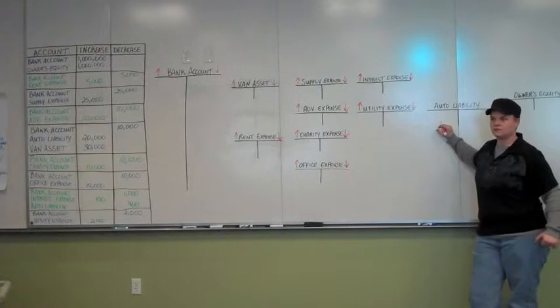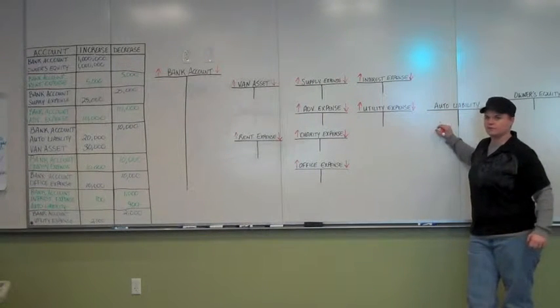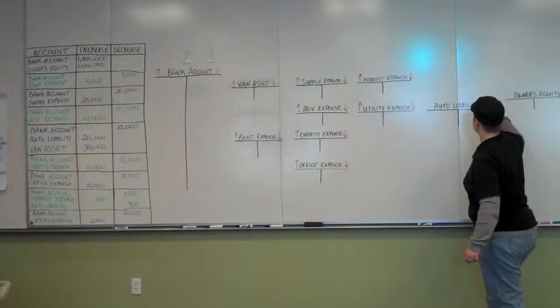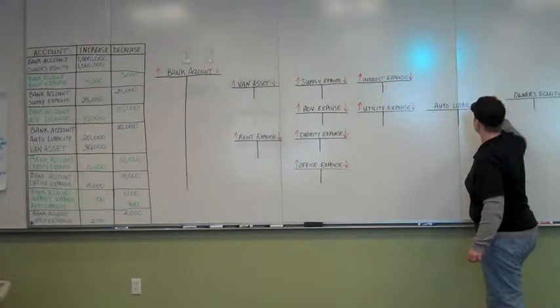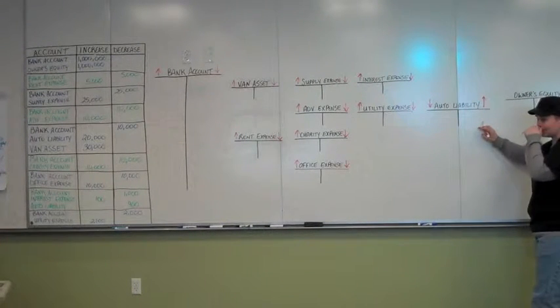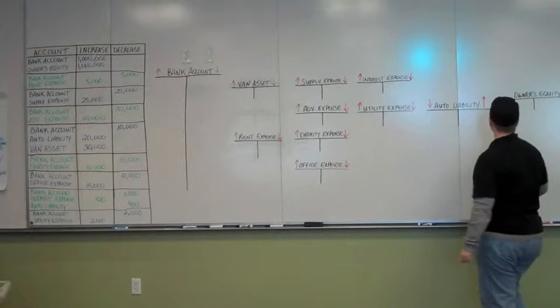All right. Auto liability. That's on the other side. What's on the other side? The liability account for Alice. So, go up and credit. Down and debit. Down and debit. Okay. Increases on the credit side. Decreases on the debit side.